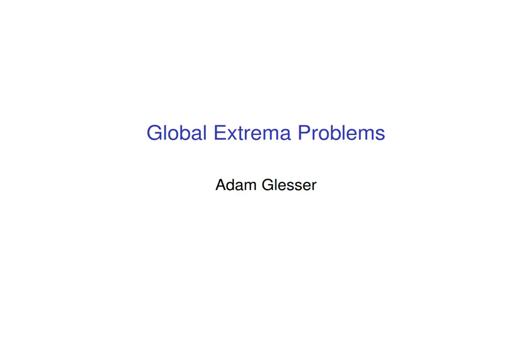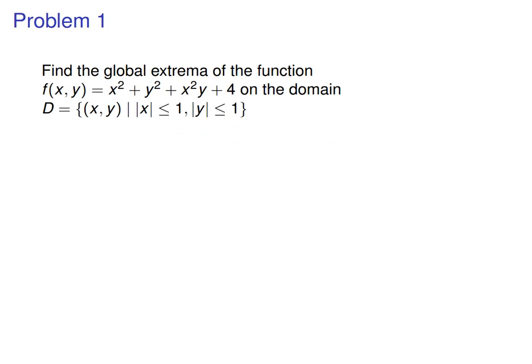Hi everybody. This is going to be an example of how to solve a global extrema problem. So this problem we've actually seen before. It was on one of the handouts I made, but we never actually finished solving this in class, so we'll go over it here now. So the question asks you to find the global extrema of the following function. f of x, y is x squared plus y squared plus x squared y plus 4, and I give you the domain of